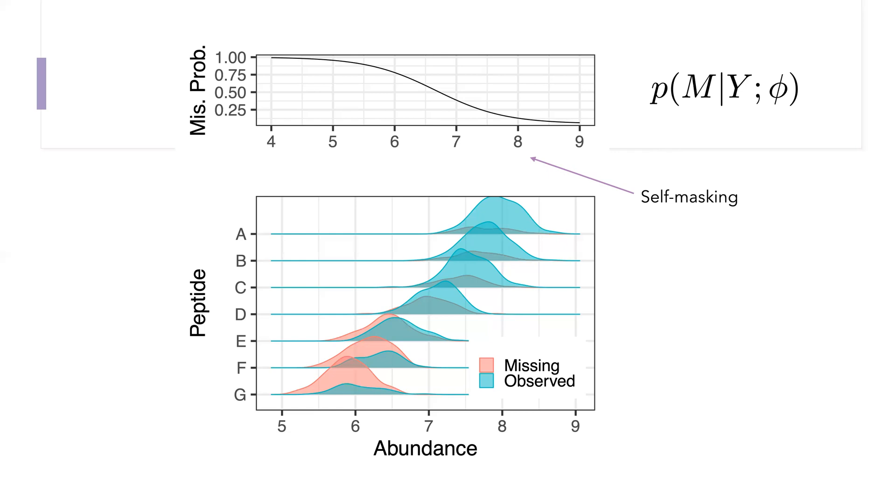As Nikolai described excellently in the last video, this may be an oversimplification. For example, in data dependent acquisition, we know there's a competition amongst the peptides in which only some small number of peptides can be analyzed at a given retention time. There, the missingness doesn't depend only on that peptide's abundance. It also depends on the abundances of some of the other peptides in the sample.